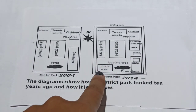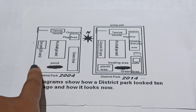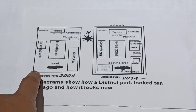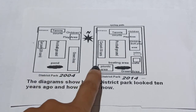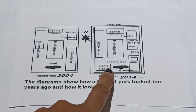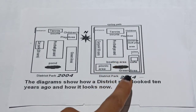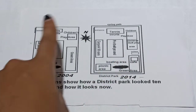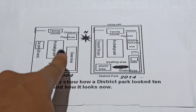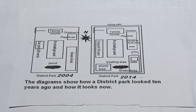The car park used to accommodate 20 cars in 2004, which increased to 50 cars in 2014. A new picnic area can also be seen on the left side of the pond, which has been converted to a boating area in 2014. The whole park is surrounded by a cycling path.